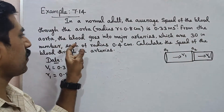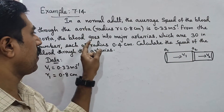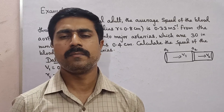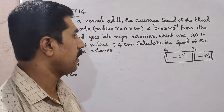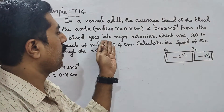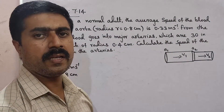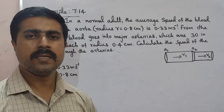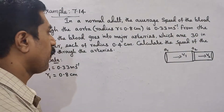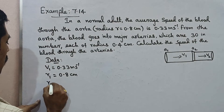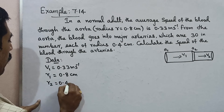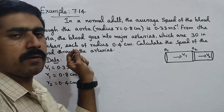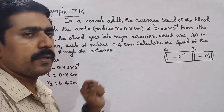From the aorta, the blood moves into major arteries. The number of arteries is 30. Each artery has a radius R2 equal to 0.4 cm. We need to find the speed V2 of blood through the arteries.